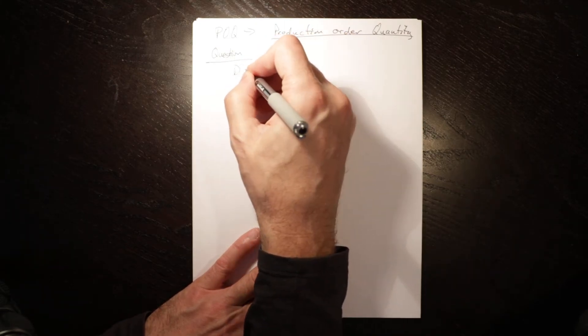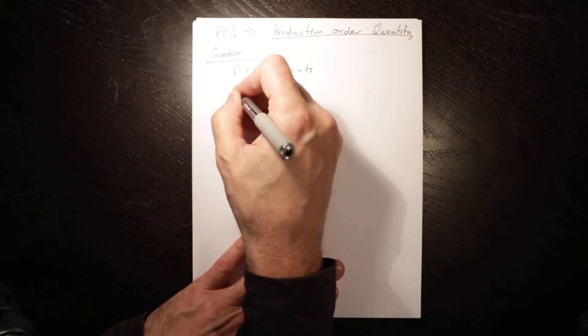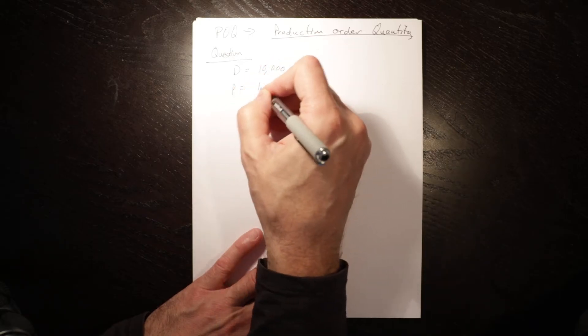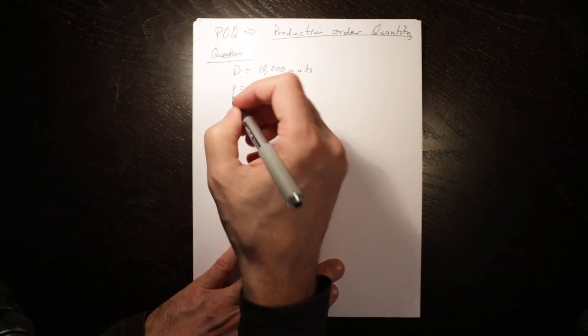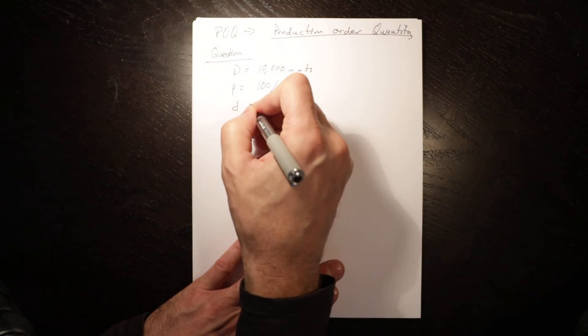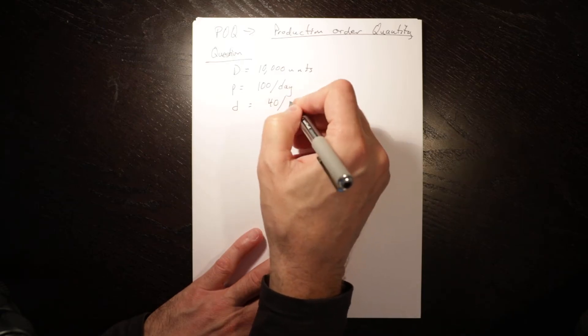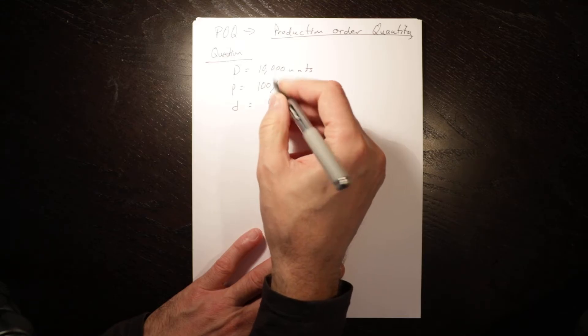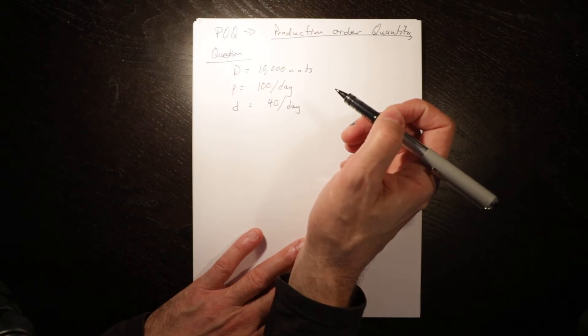Demand, that's annual demand with a big D, is 10,000 units. P, which is the production rate, is 100 per day, that means you can produce 100 units per day. D, little d, is 40 per day, so that's 40 units per day is demand. 10,000 units per day is annual demand.